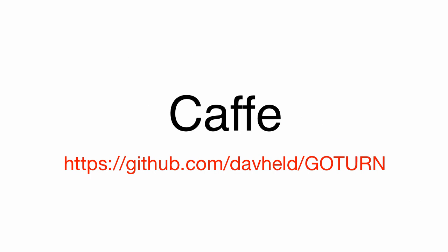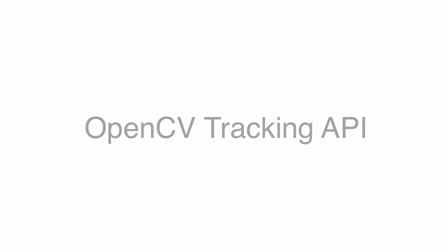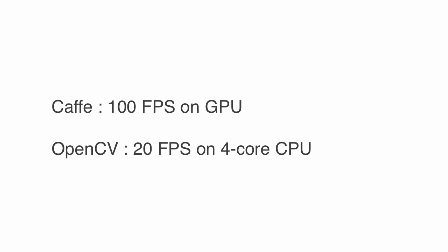GoTurn was implemented in CAFE. Recently, it was re-implemented in OpenCV as part of its tracking API. This demo is based on the output of the tracking API in OpenCV 3.4.1. On a GPU, the CAFE implementation runs at 100 frames a second, and even on a 2.5 GHz Intel Core i7 4-Core CPU, the OpenCV version runs at 20 to 25 frames per second.